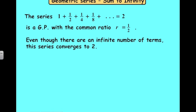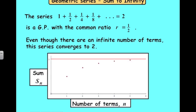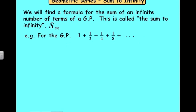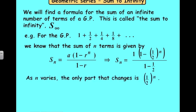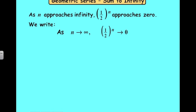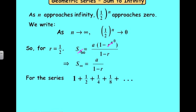This is a geometric progression with a equals one and r equals one half. You can also see it in a diagram: after one term the sum is one, after two terms it's one and a half, and so on — heading towards two but never quite reaching it. Using the sum formula with a equals one and r equals one half, as n gets very large, (1/2)^n tends to zero, so the sum to infinity simplifies to a over (1 minus r), which gives two — the correct answer.